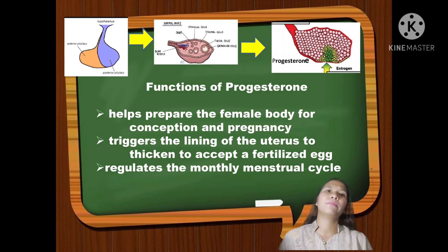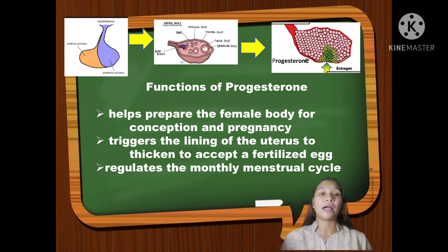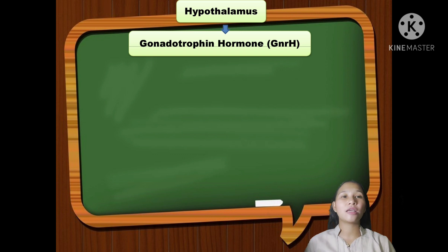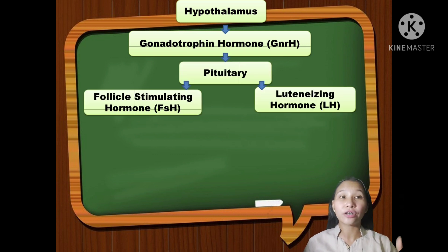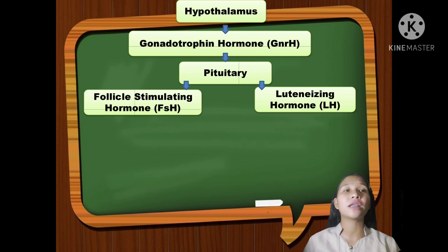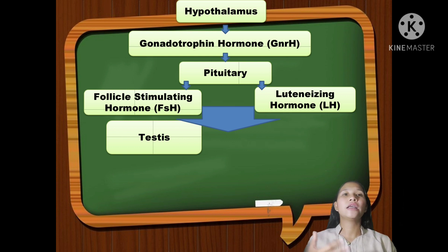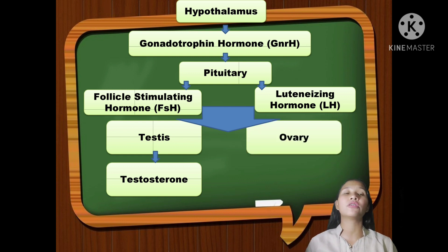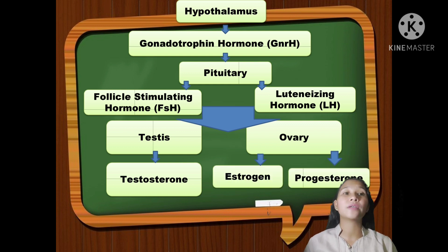It is important to remember that hormone secretions affect the development of both the female and male body, physically and emotionally, during the puberty stage. In summary, the hypothalamus releases GnRH, which triggers the anterior pituitary gland to release two hormones: follicle-stimulating hormone and luteinizing hormone. These two hormones are responsible for the testes producing testosterone and the ovaries producing estrogen and progesterone.